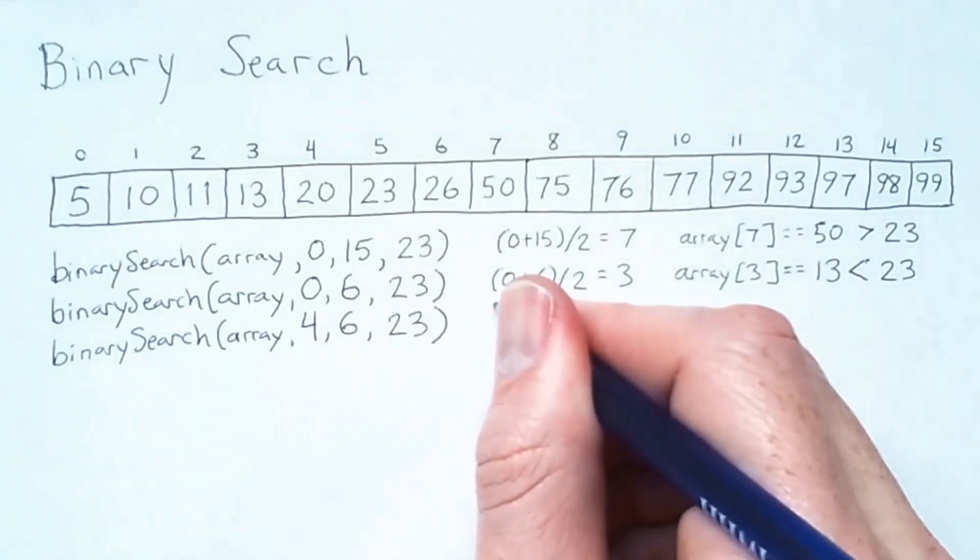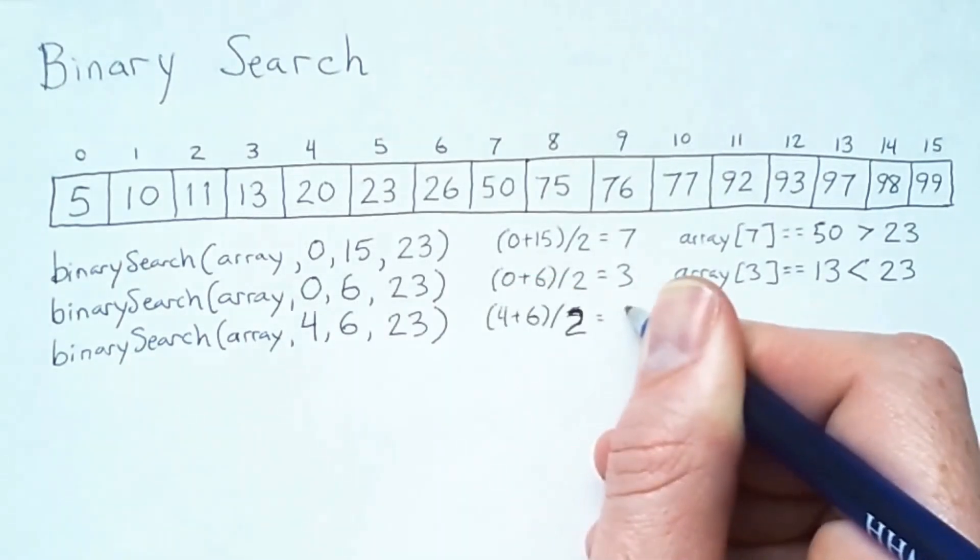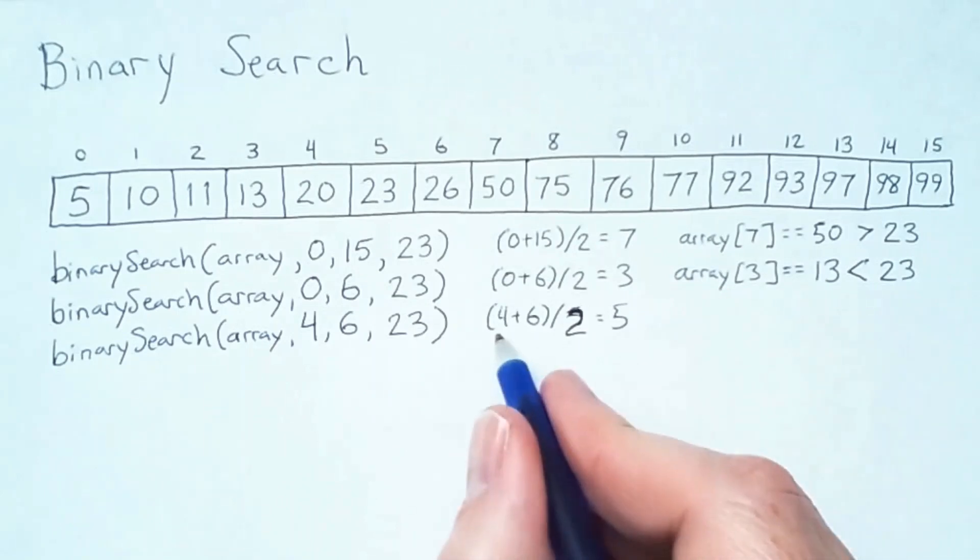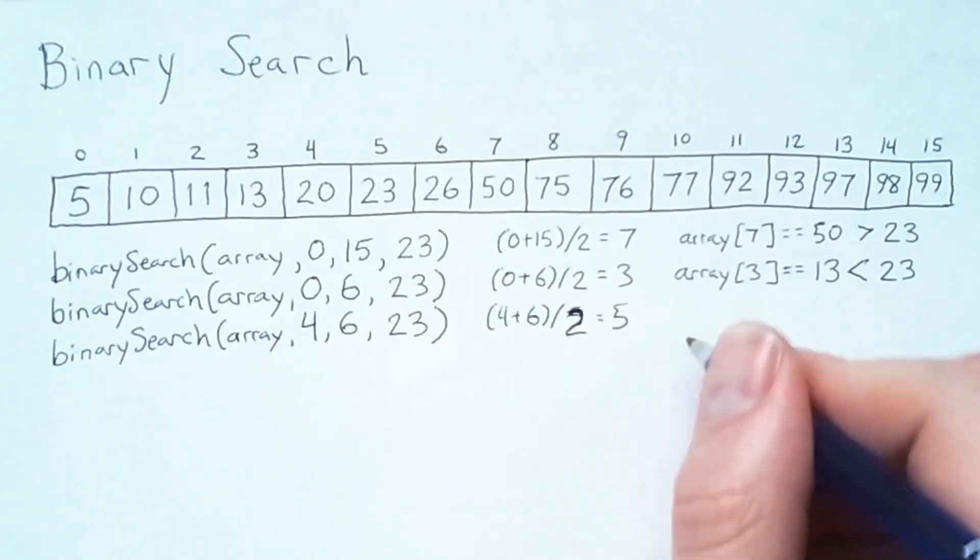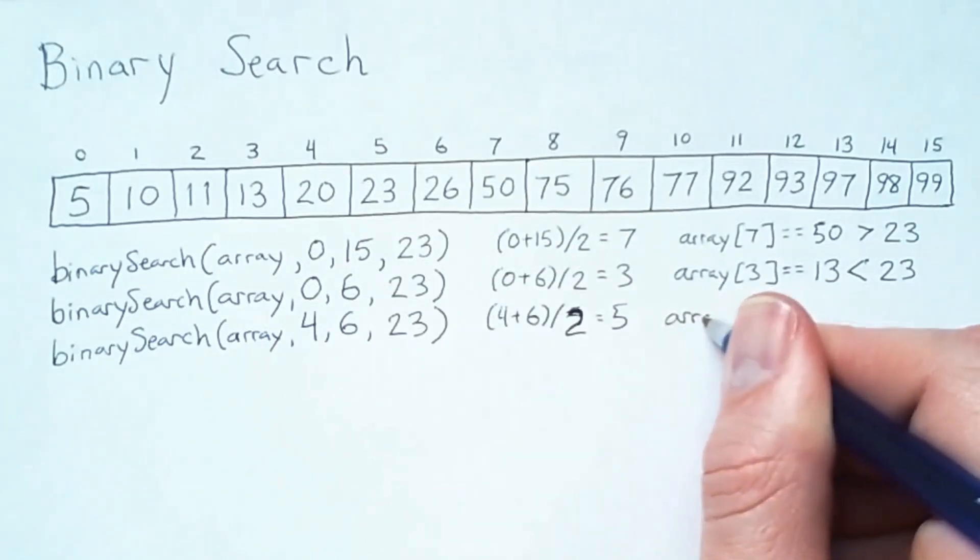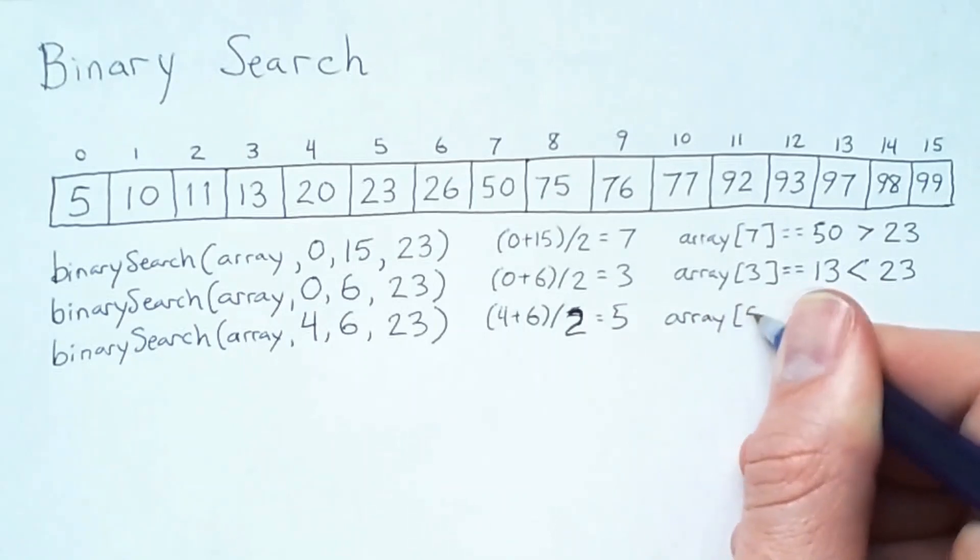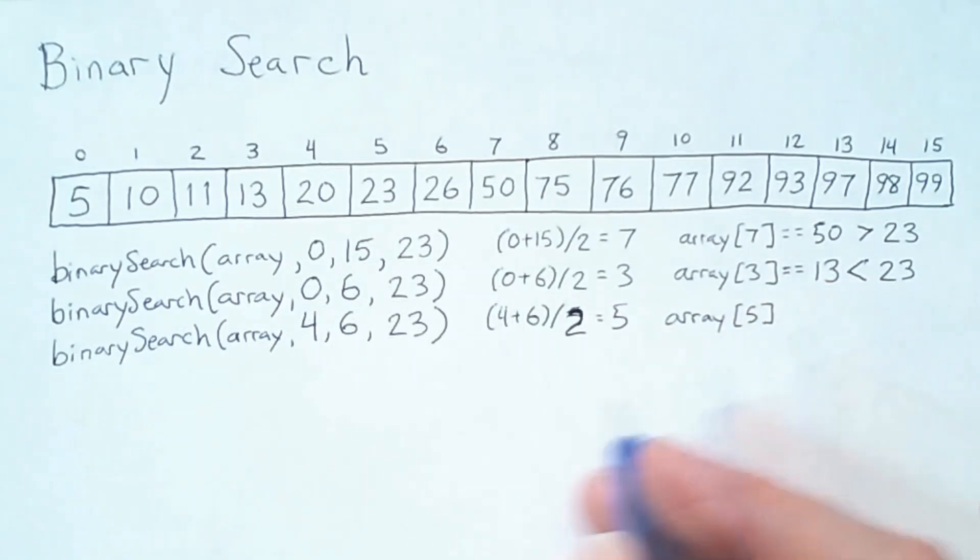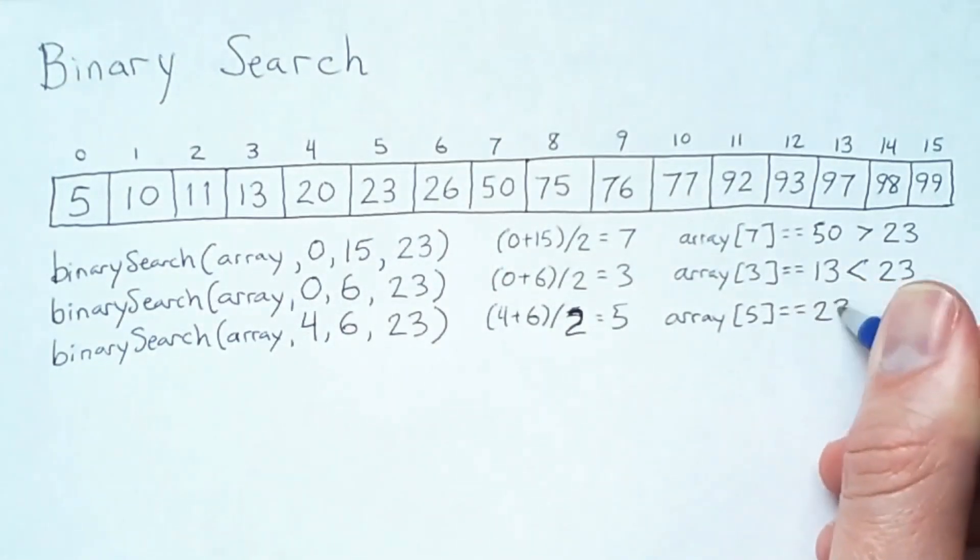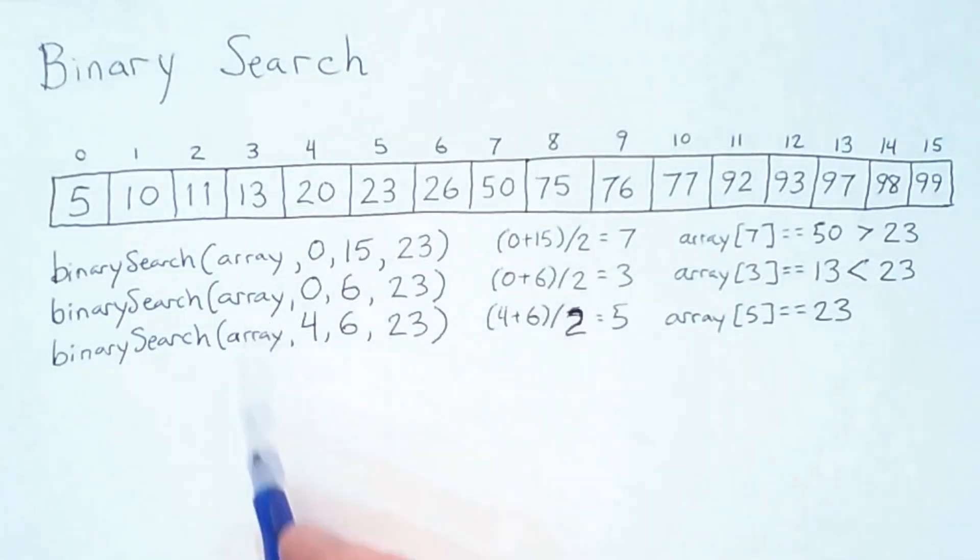The midpoint of this range is 5. 4 plus 6 is 10 divided by 2 is 5. The value at index 5 is 23. So we have found our search key, and we have successfully gone through the array with binary search to find the search key.